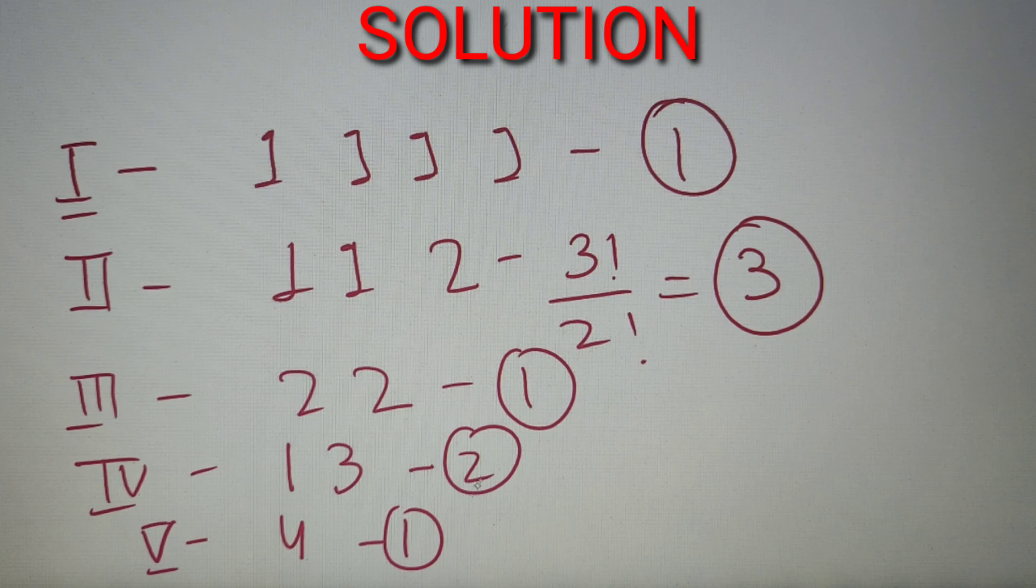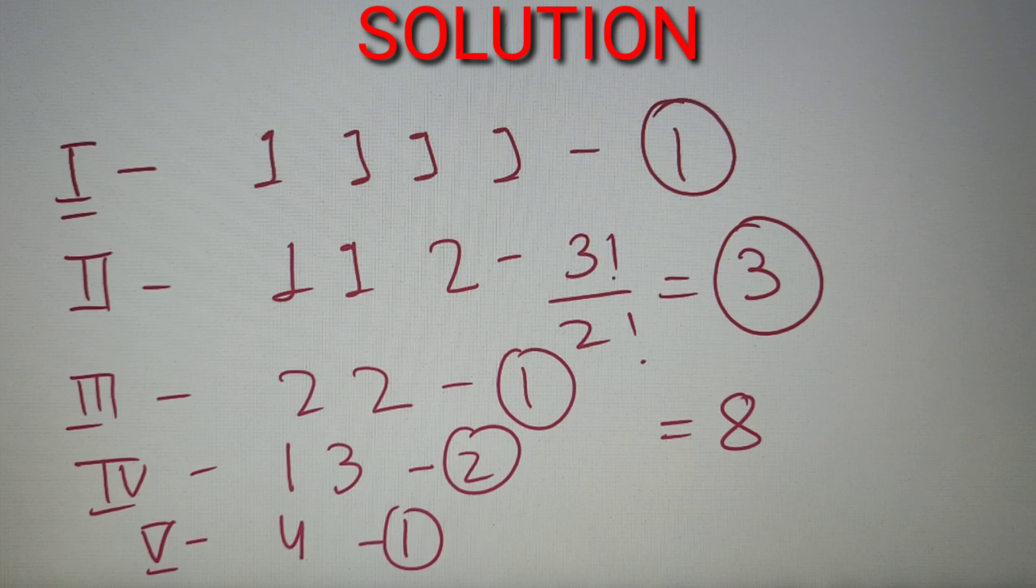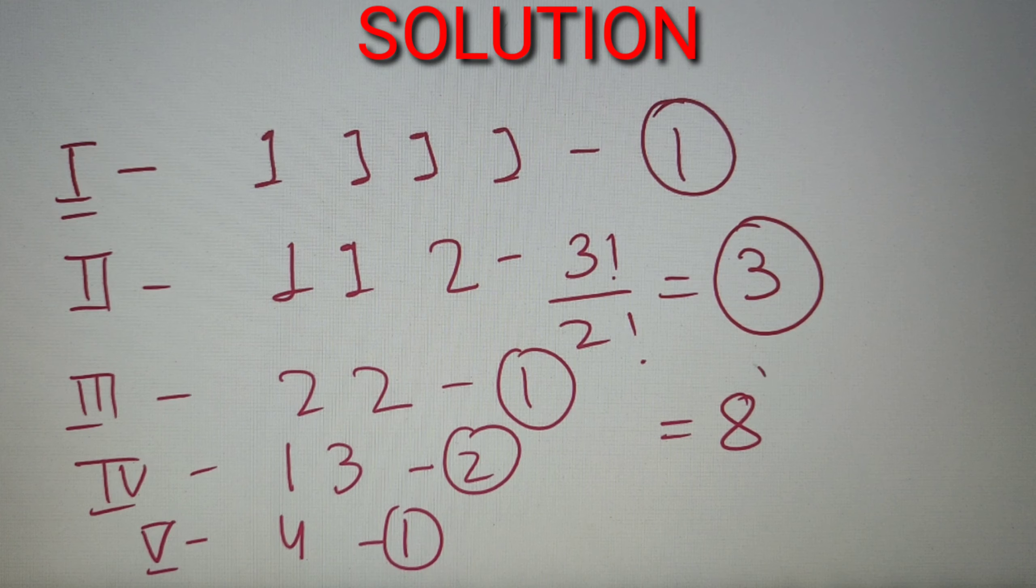So our combined answer will be equal to the sum of all these possible cases, which is equal to eight. So the number of ways in which he can reach the top is equal to eight.